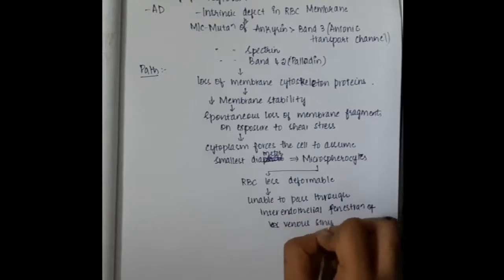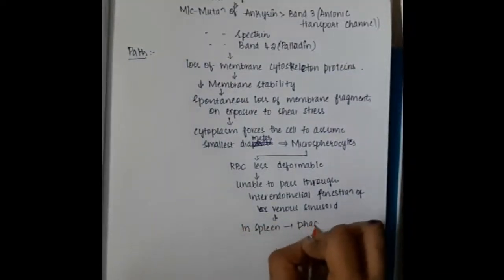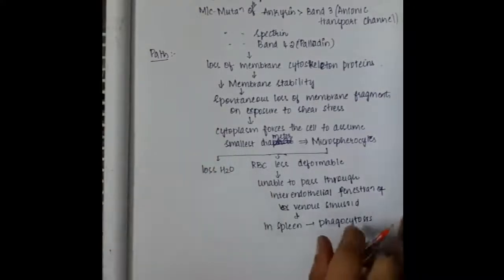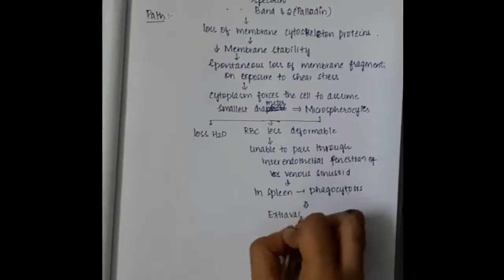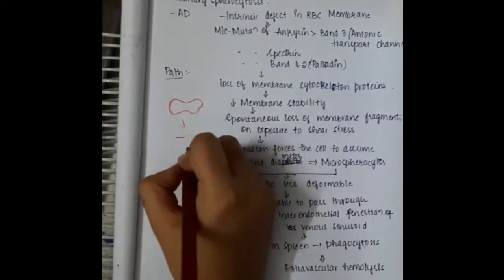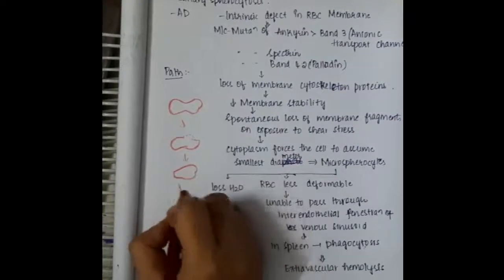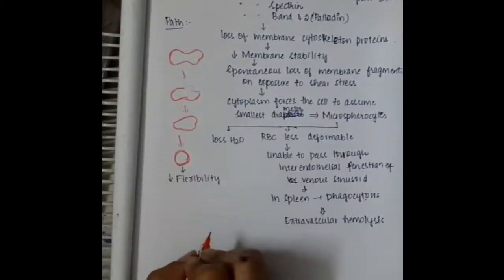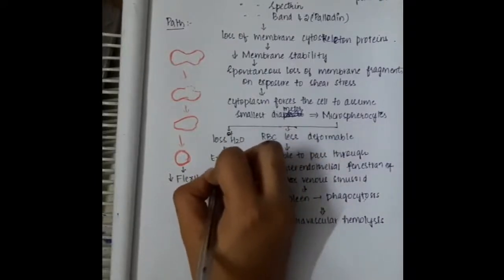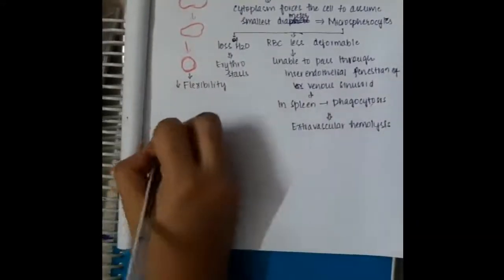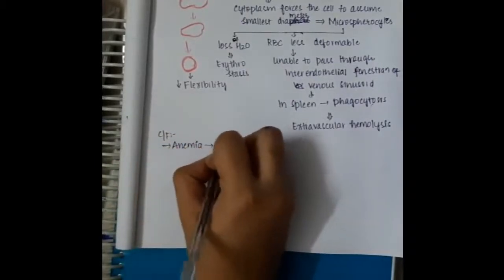Because they are microsphaerocytes, they cannot deform and cannot pass through the inter-endothelial fenestrations. Normally, due to the biconcave nature of RBCs, they can easily pass through the small gaps. But now that RBCs have become spherical, it is difficult to pass through the fenestrations in the venous sinusoid. In the spleen, this leads to phagocytosis and extravascular hemolysis. Slowly the RBC loses its parts due to stress, becoming a spherocyte and losing its flexibility.